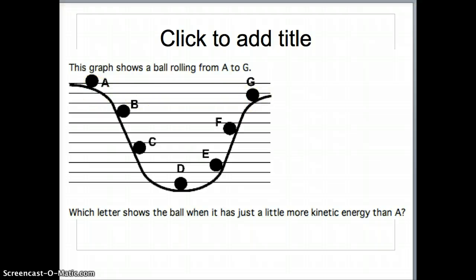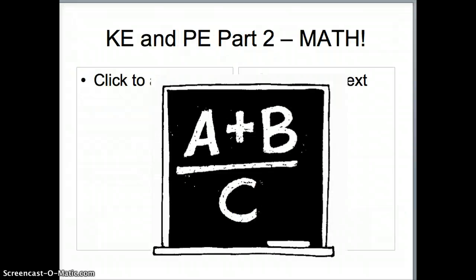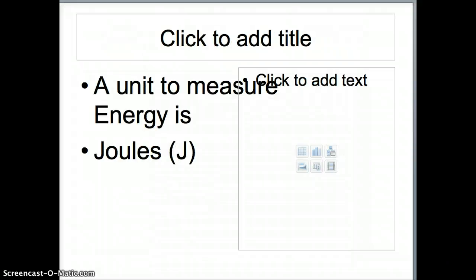That concludes the first part. Now let's get into the math. There is a way to figure out the exact kinetic and potential energy an object has. The first thing you need to know is the unit we use is called joules. So if I asked you how much kinetic or potential energy something has, you'd say 10 joules, 5 joules, and so on.